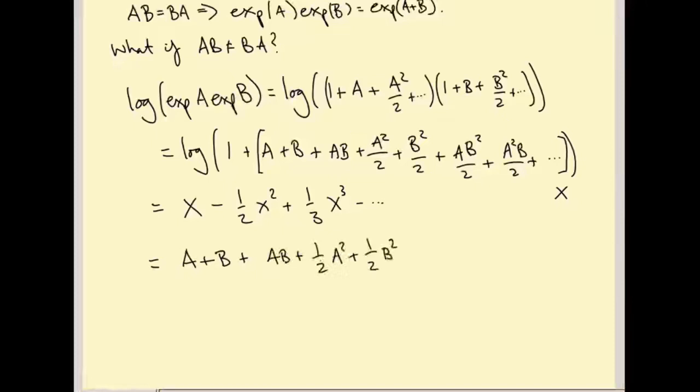So we're going to get A plus B plus AB plus a half A squared plus a half B squared. And so what I'm going to do is in the following, I'm just going to keep the terms up to second order. I'm going to ignore everything of order 3 and higher and just write it as dot dot dot. So this is X plus dot dot dot. And then minus a half X squared. What do I get if I square this whole mess in brackets? Well, I get a lot of cross terms. I get things like A squared, AB, I get a BA, I get a B squared, and I get a lot of stuff that's cubic or higher order. And then one third X cubed, everything inside X cubed is at least cubic, so I get dot dot dot.